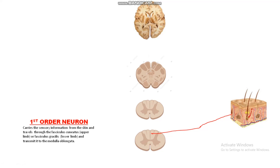If the sensory information of fine touch, vibration, and proprioception is coming from the upper limb — above the level of thoracic six vertebra — then the first-order neuron travels through the fasciculus cuneatus. If the sensory information is coming from the lower limb — below the level of thoracic six vertebra — then the first-order neuron travels through the fasciculus gracilis.